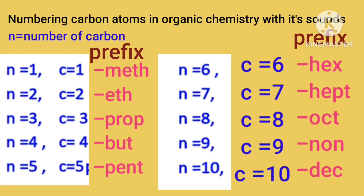Organic compounds are named using a prefix and a suffix system. The prefix is part of the compound name for carbon-hydrocarbons. The suffix is also called the compound of carbon-hydrocarbons. The formula is called the compound of carbon-hydrocarbon.